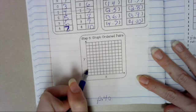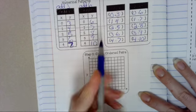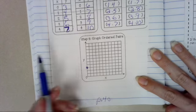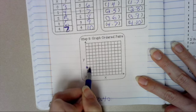And we're going to put a dot, which is called a point. Our next coordinate is 1, 4. So we're going to go right 1. Up 1, 2, 3, 4.